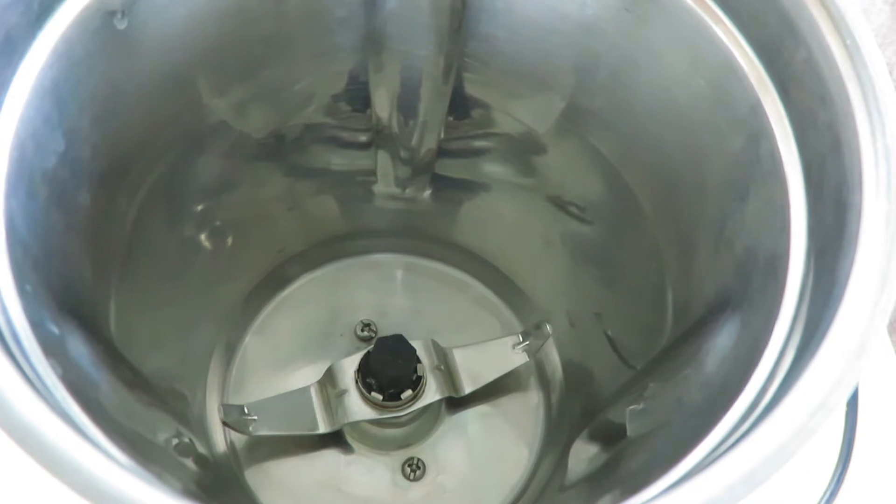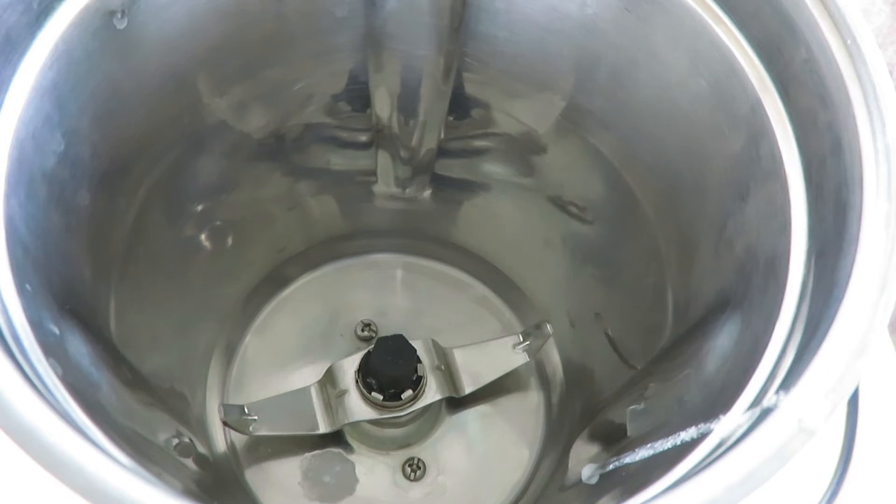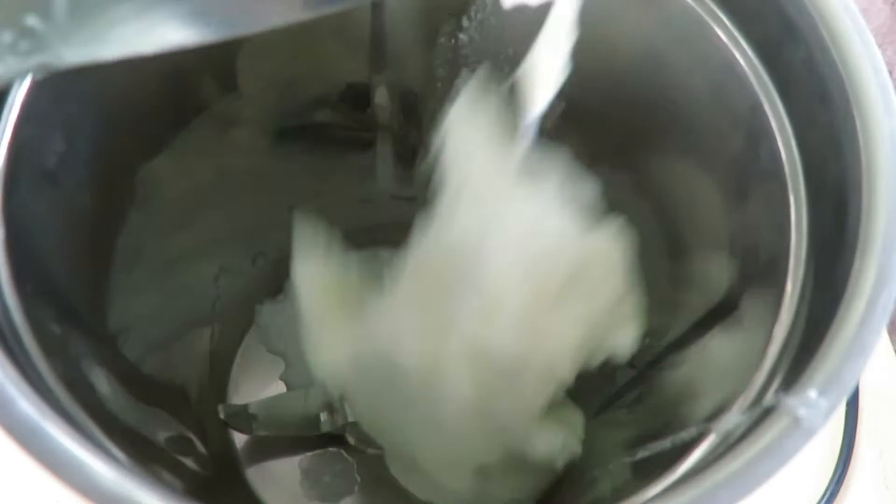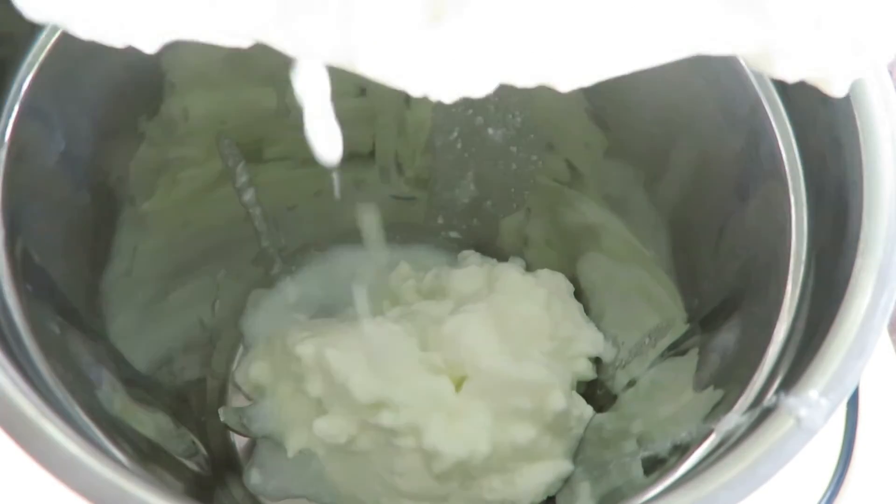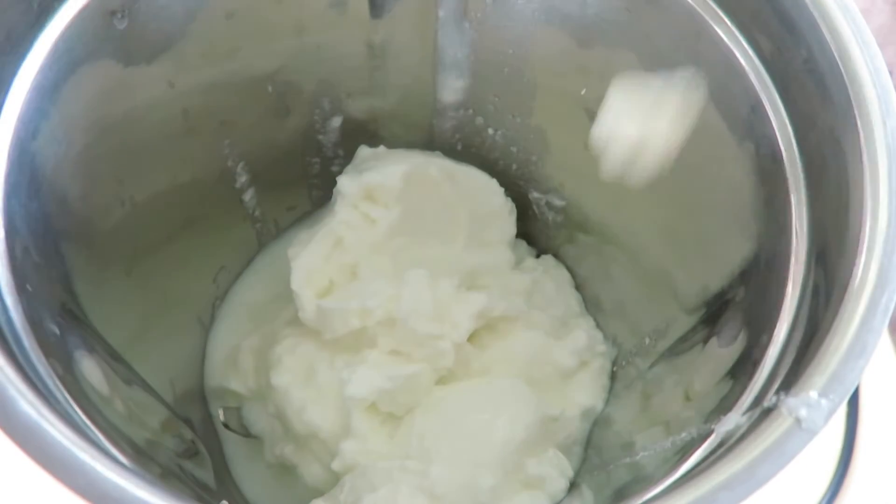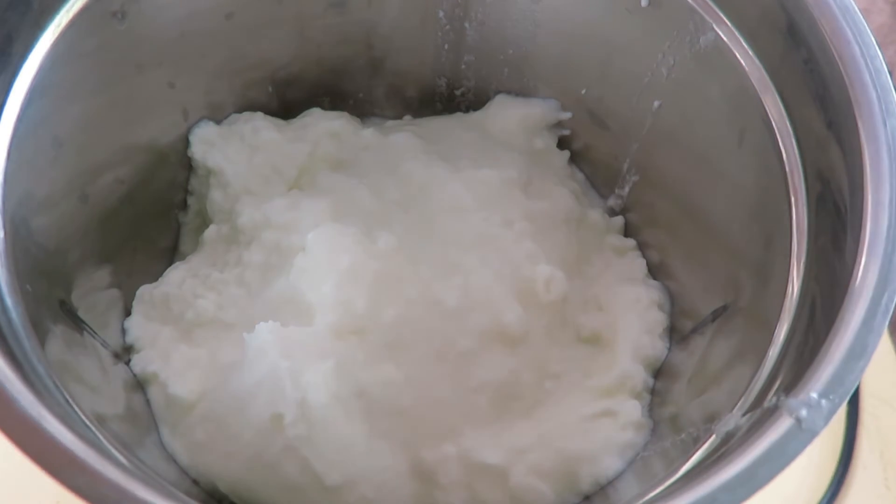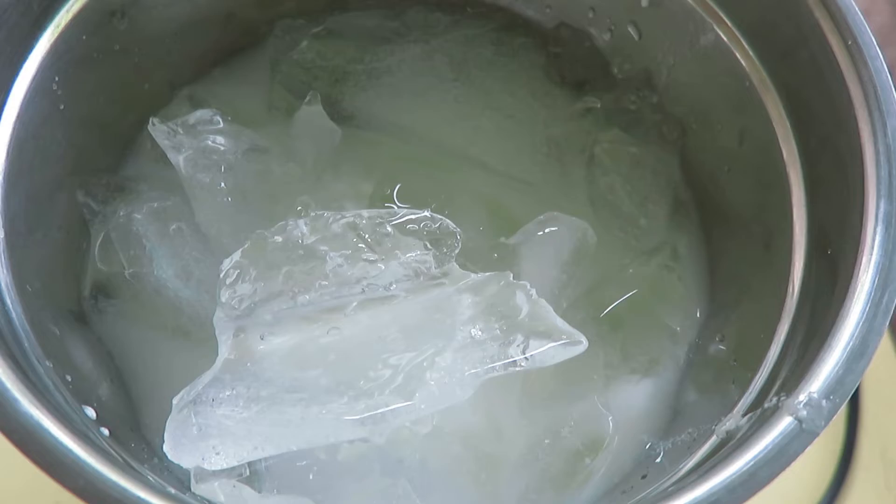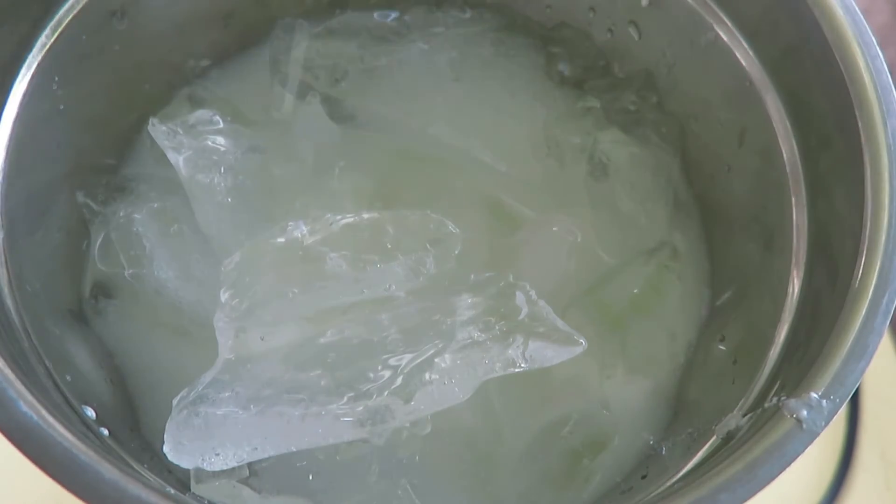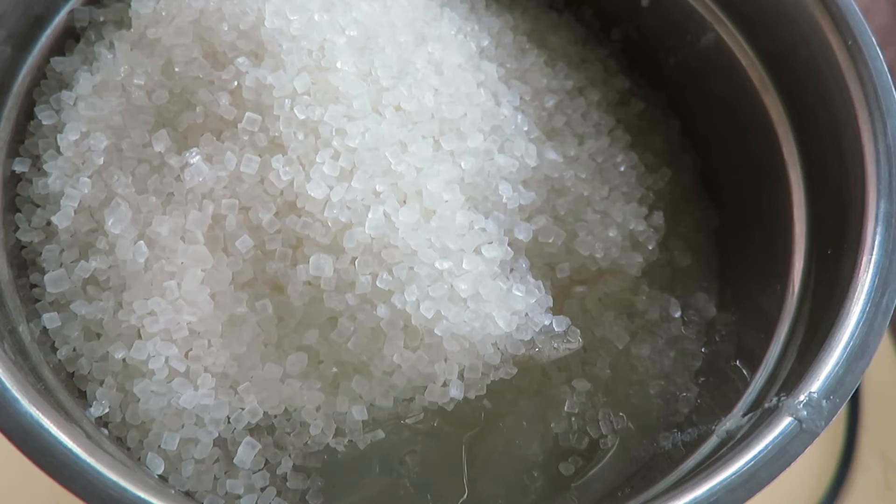For lassi, we will require four cups of yogurt. This is fresh yogurt. First, I will start making the base because there will be four variants of lassi that I'll show you today. This recipe is super easy and all it needs is a grinder. To four cups of yogurt, we will add two cups of ice cubes and one cup of sugar. Let's give it a mix.